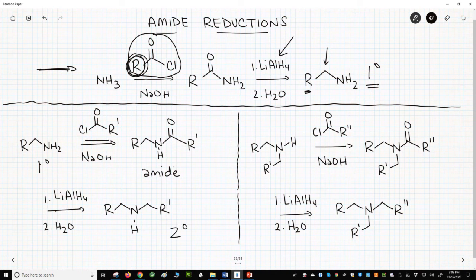The new group on the nitrogen is the R group from our acid chloride plus a CH2, which comes from the carbonyl carbon. Repeat this process again and you get a tertiary amine.